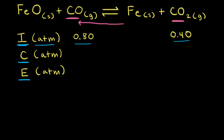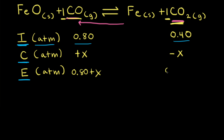Let's think about carbon dioxide first. We're going to lose some of it, but we don't know how much, so that's going to be represented by X. We write minus X for carbon dioxide. Since the coefficient is 1 in front of carbon dioxide and also 1 in front of carbon monoxide, if we lose X for carbon dioxide, we gain X for carbon monoxide. Therefore, the equilibrium partial pressure for carbon monoxide would be 0.80 plus X, and the equilibrium partial pressure for carbon dioxide would be 0.40 minus X.